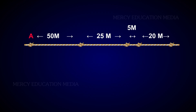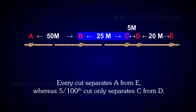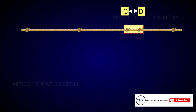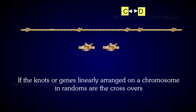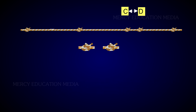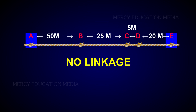Let A, B, C, D, and E be five knots on a string, separated by a distance as shown. The probability of making a random cut between two knots is directly proportional to the distance between them. Every cut separates A from E, whereas only 5 out of 100 cuts separate C from D. If the knots are genes linearly arranged on a chromosome and the random cuts are crossovers, then C and D remain linked, whereas A and E will not show linkage.